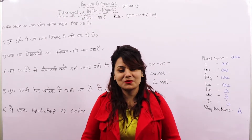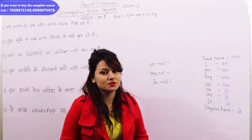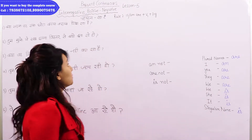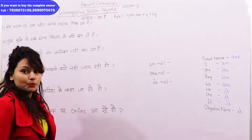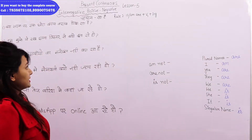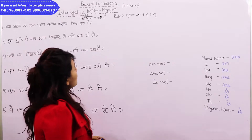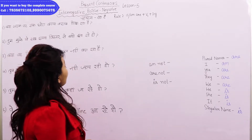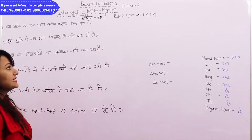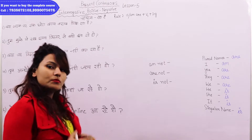Hello students, welcome to governmentjobspreparation.com. This is Preeti. Today we will learn lesson number five: present continuous interrogative positive and negative sentences. The rule for present continuous is verb first form plus...